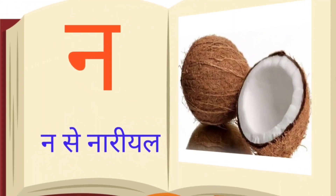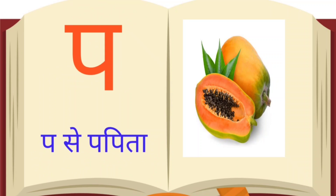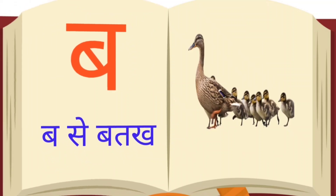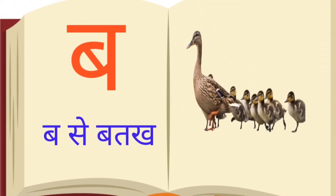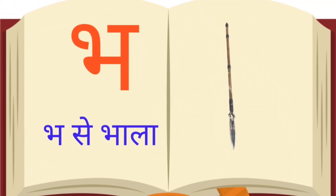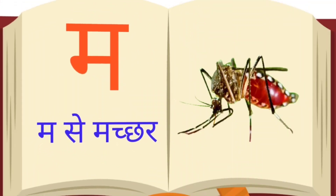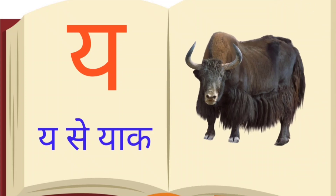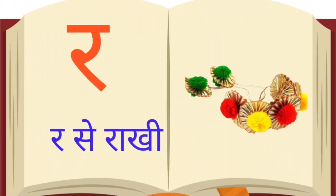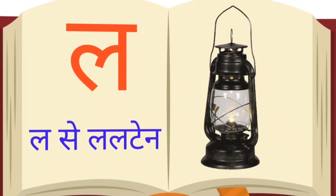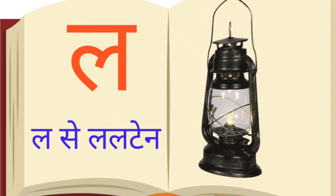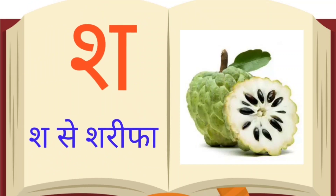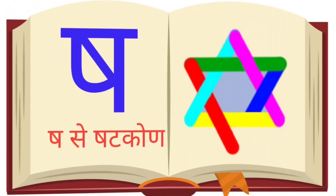ત સે તરબૂજ, થ સે દાળ, ધ સે ધાન. ન સે નારિયળ, પ સે પપૈયા, ફ સે ફૂલ. ર સે રાખી, લ સે બતક, ભ સે ભાલુ, મ સે મચ્છર.